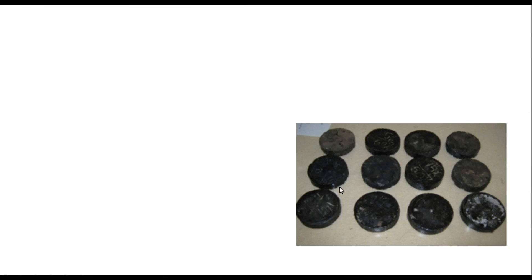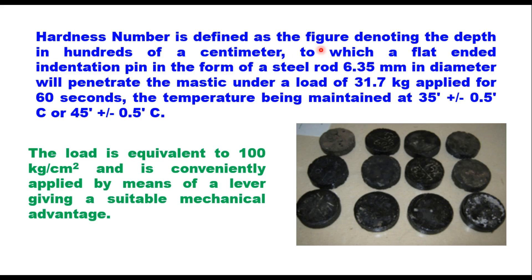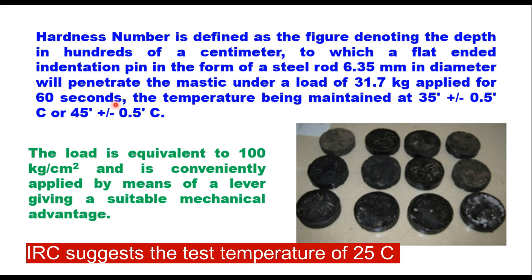Samples of mastic asphalt are prepared in a mold of 100 mm diameter and 25 mm thickness and tested for their hardness number. The hardness number is defined as the depth in hundredths of a centimeter to which a flat-ended indentation pin — a steel rod 6.35 mm in diameter — will penetrate the mastic under a load of 31.7 kg applied for 60 seconds at a temperature of 25 or 35 degrees centigrade or as per contract document.